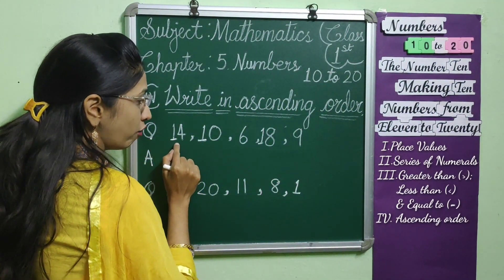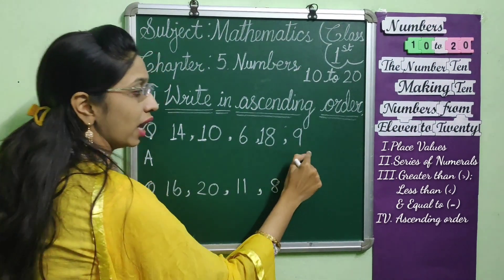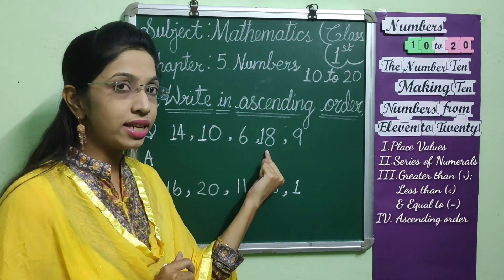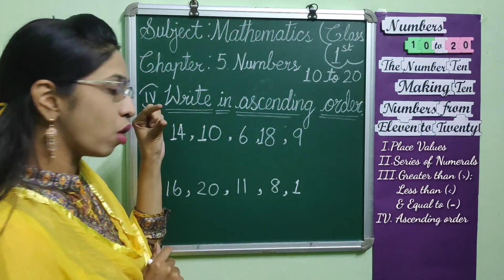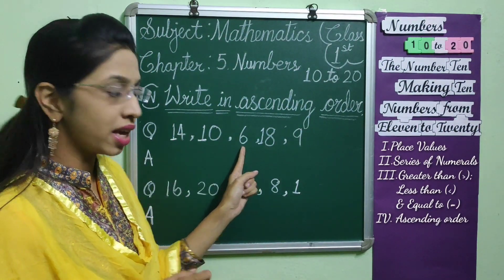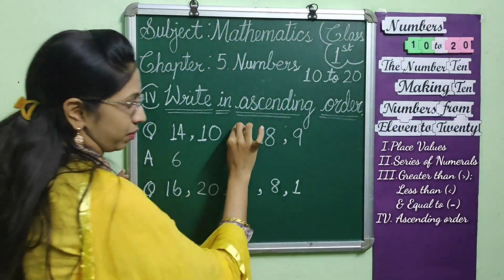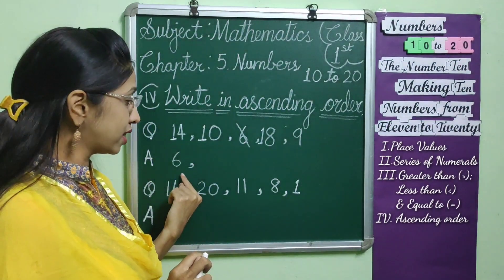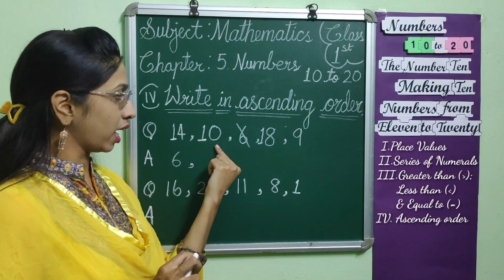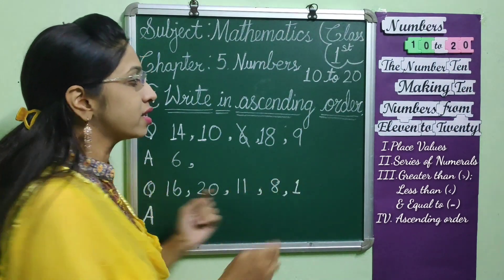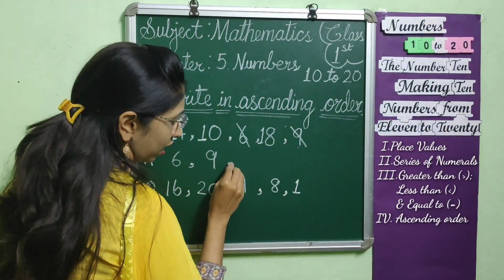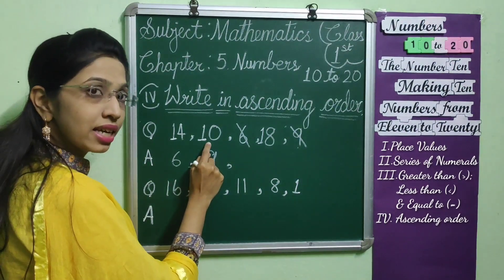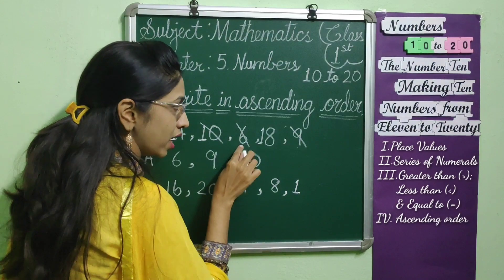The numbers are 14, 10, 6, 18, 9. In these numbers, which is the smallest number? It is 6. So, first we will write 6. Then, in the remaining numbers 14, 10, 18, 9 — which is the next little bigger? It is 9. So, next we write 9. After 9, which is little bigger from the remaining three numbers? It is 10. So, we wrote 6, 9, 10.